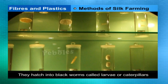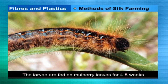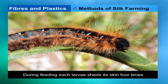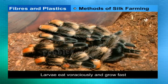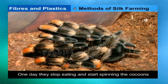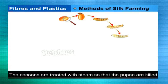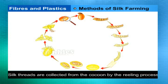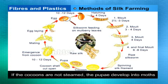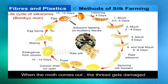In silk farming, eggs of silkworms are collected and hatched in an incubator. They hatch into black worms called larvae or caterpillars. The larvae are fed on mulberry leaves for four to five weeks. During feeding, each larva sheds its skin four times; this process of shedding skin is called molting. Larvae eat voraciously and grow fast. One day they stop eating, climb twigs, and start spinning cocoons — this stage is called the pupa stage. The cocoons are treated with steam to kill the pupae, and silk threads are collected by a process called reeling.